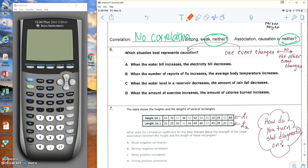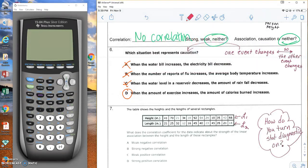So the next one is asking, which of these best represents causation? One causing the other. When the water bill increases, the electricity bill decreases. These have nothing to do with each other. When the number of reports of flu increases, average body temperature increases. Again, these have nothing to do with each other. Just because people are getting the flu doesn't mean everybody's body temp is increasing. Water level in a reservoir decreases, the amount of rainfall decreases. That's not true. Rain is not dependent on a reservoir. And then, when the amount of exercise increases, the amount of calorie burned increases. That is true. The more you exercise, the more calories you burn.